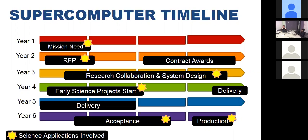Finally, we use science in acceptance — often the same benchmarks and applications used early in the process are used to make sure we accept these machines and they're good. The summary point is not to teach you about the project process of acquiring a supercomputer, but to point out that the science staff at these facilities are engaged from the first moment these machines are conceived of, trying to incorporate science to make sure that the capabilities deployed are the most effective ones for science applications.